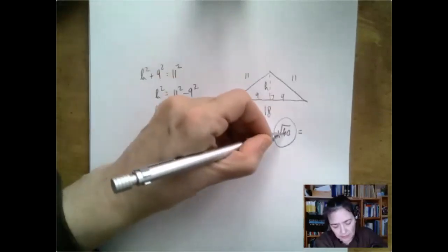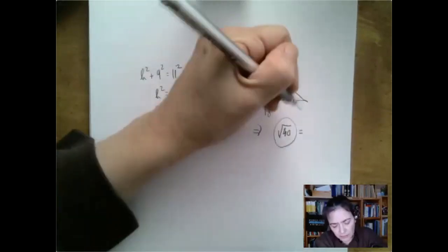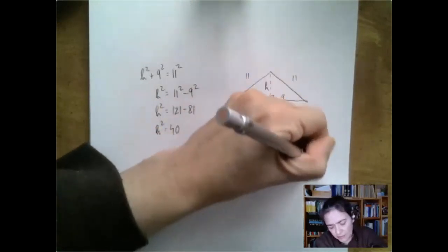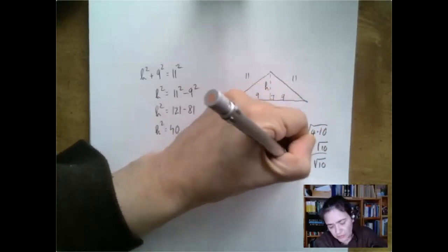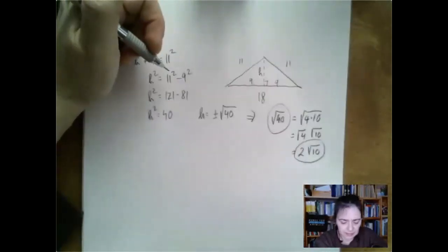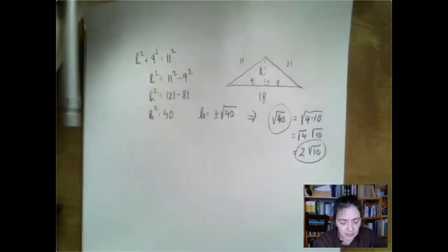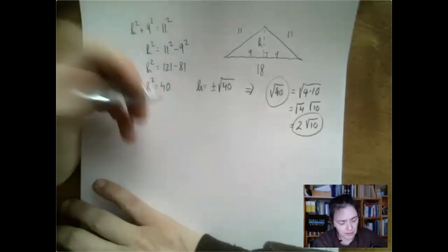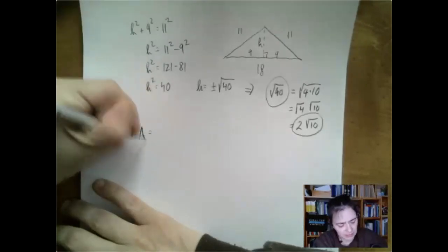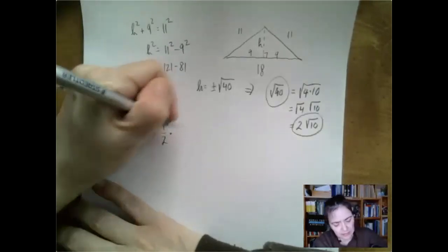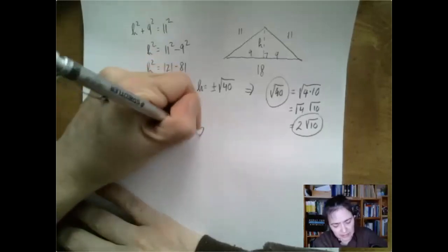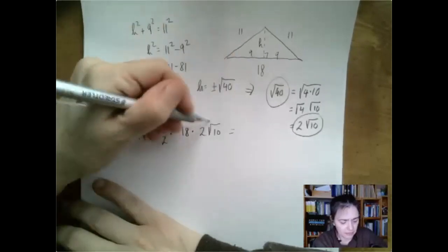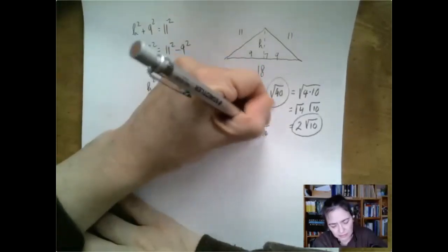So the height is the square root of 40. If we simplify it, 40 is 4 times 10, so the square root of 40 is also written as 2 times the square root of 10. But that's not the end of the problem — the problem asks for the exact value of the area. So the area is one half times base times height, where the base was 18 and the height is 2 times the square root of 10.